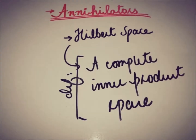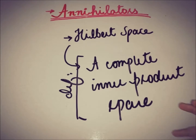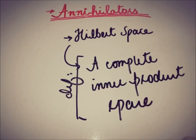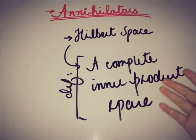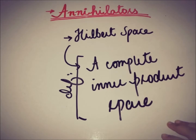A Hilbert space is a complete inner product space. A complete space is one where every Cauchy sequence that converges does so to a point within that space. So a Hilbert space is a complete inner product space.